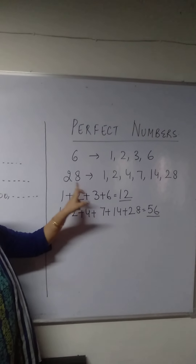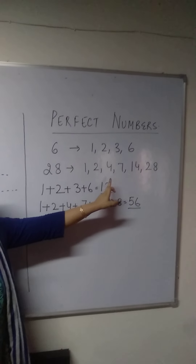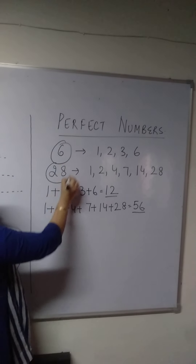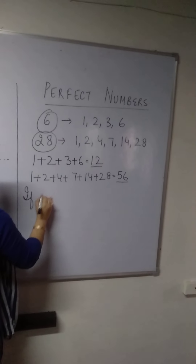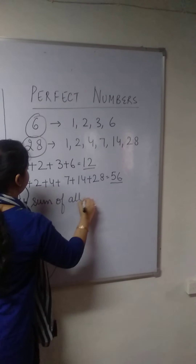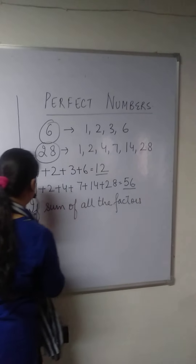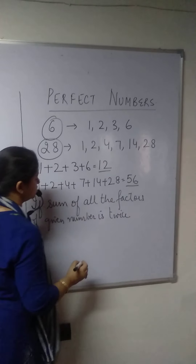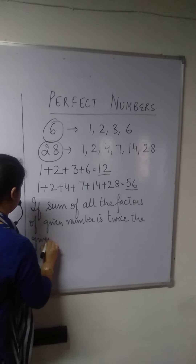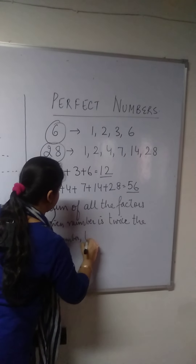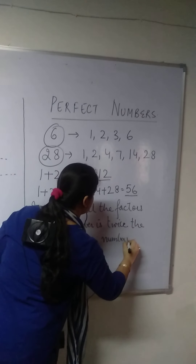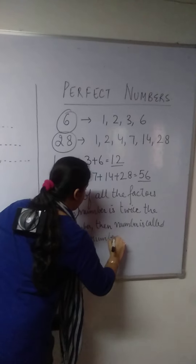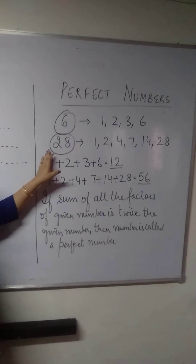If you add all the factors of the given number and the sum is coming twice the given number, then that number is called a perfect number. So according to the definition, if the sum of all the factors of a given number is twice the given number, then the number is called a perfect number. So we have here two examples: 6 and 28 are two perfect numbers.